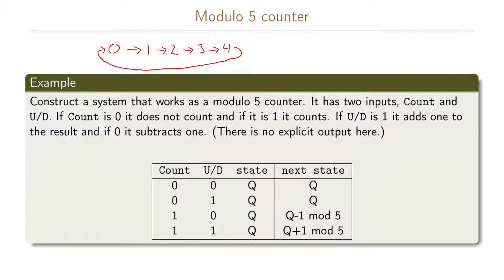This modulo 5 counter has two inputs. One input is called count and one input is called u/d. If count is 0 it does not count at all, and if it is 1 it will count — you can call this an enable signal. The other input signal u/d: if it is 1 it adds 1 to the result, and if it is 0 it will subtract 1 from the result. There is no explicit output, so we can see the output as the state. If we want to specifically extract an output we can do that through the state, but we will not define the output explicitly here.